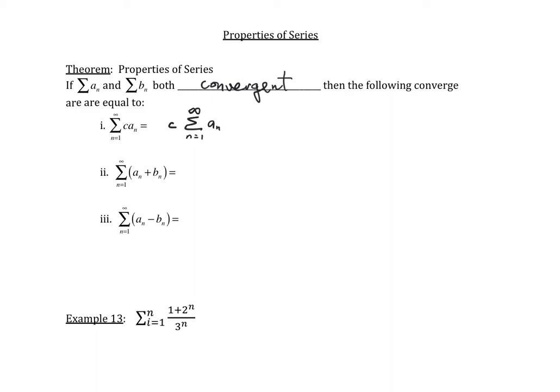The second property basically says if you have two general terms added together and you take the infinite sum, we can split it. So we can split it so that you have the summation as n goes from 1 to infinity of a_n, plus the summation as n goes from 1 to infinity of b_n. I want to reiterate that it's important that both of these series converge. You need them to be convergent first.